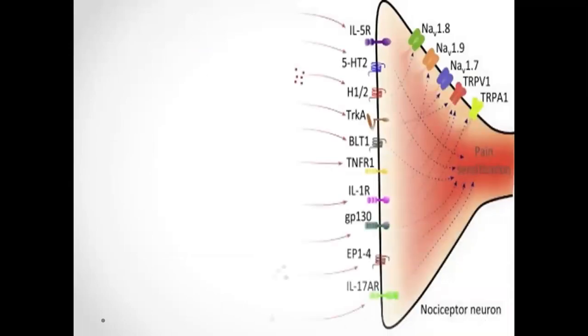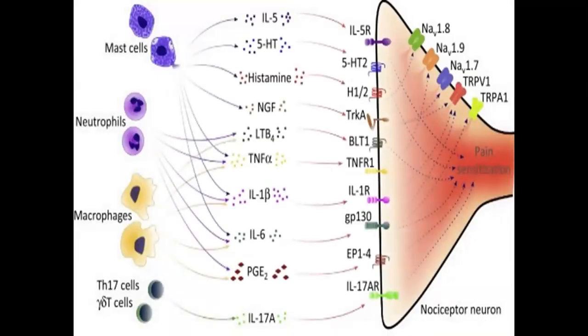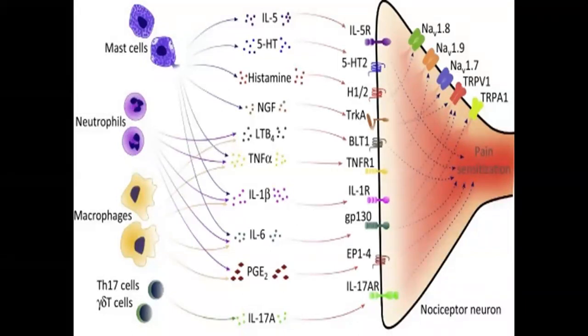As we are showing in this figure, mast cells, neutrophils, macrophages, and Th17 cells all release chemicals which stimulate the nociceptor neurons, as you are seeing on the screen. Therefore, the pain that a patient perceives and describes to a clinician is the sum of all stimulated pain-sensitive nerve endings, not just one.